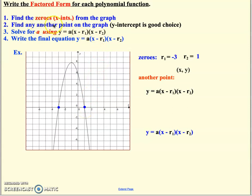Then it says to find any other point on the graph that actually sits on a grid mark. It says the y-intercept is a good choice, which it actually is always your best choice. So always grab your y-intercept.